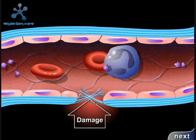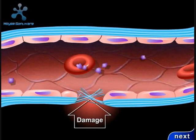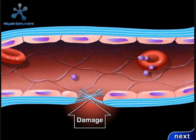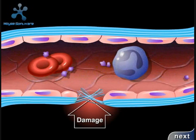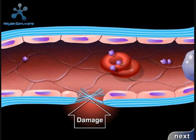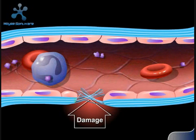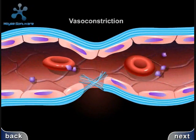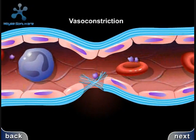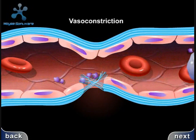Damage to small blood vessels and capillaries frequently occurs. When these vessels are damaged, there are three basic mechanisms that promote hemostasis, or the stoppage of bleeding. Following damage, there is an immediate reflex that promotes vasoconstriction, thus diminishing blood loss.